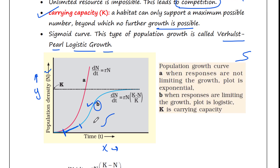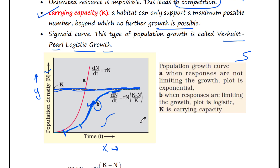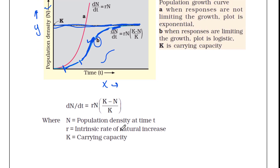After the lag phase we see accelerated growth — very high growth. Then the growth starts reducing. Finally, when the population density reaches the carrying capacity (represented by the carrying capacity line), the growth becomes very stable — a straight line. So we have already seen that dN/dt equals rN in exponential growth.